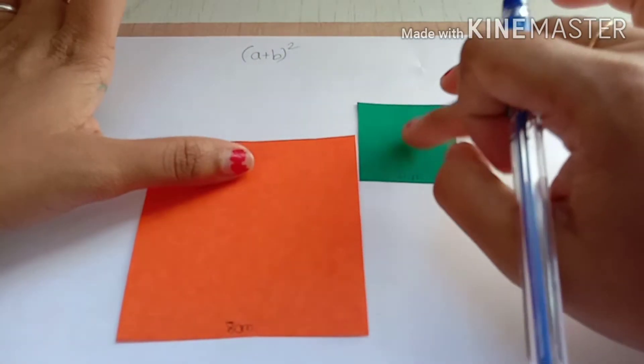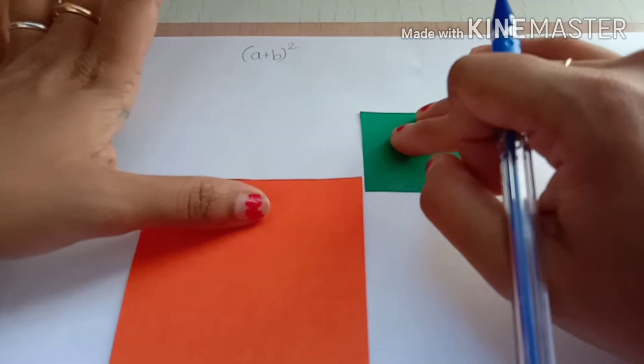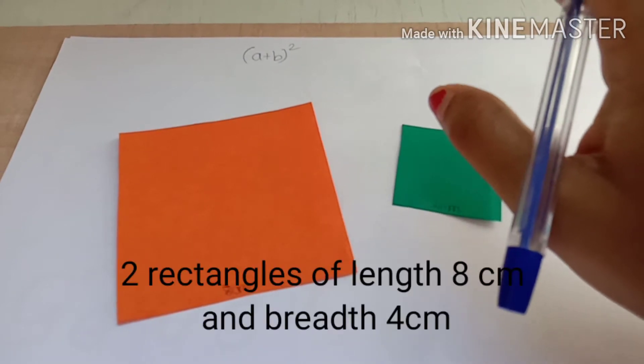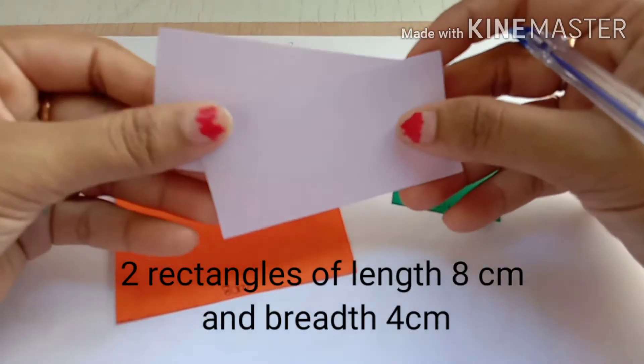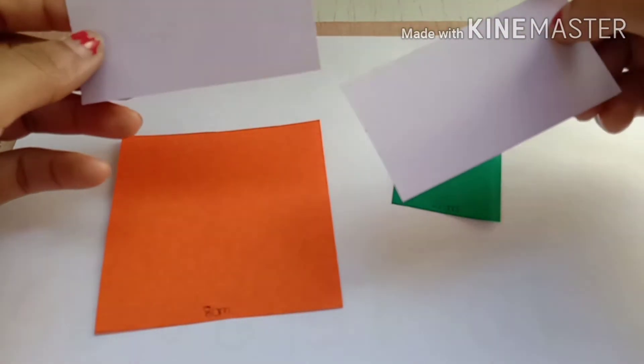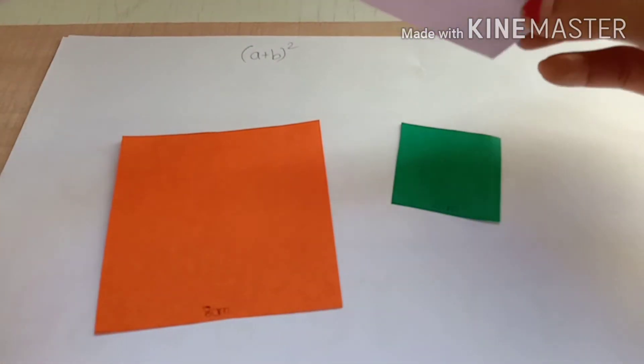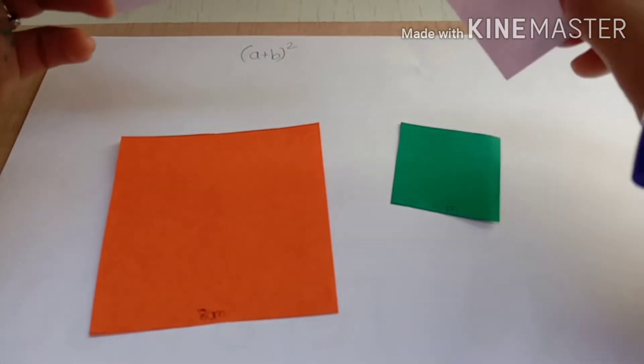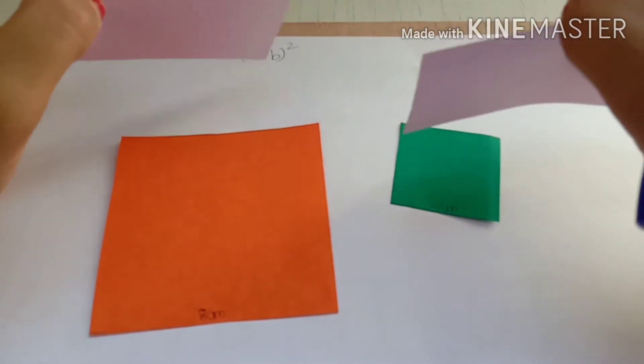And another square of side 4 centimeters. Similarly, I want two rectangles of length 8 centimeters and width 4 centimeters. I have these things: two squares and two rectangles with me. Now I have to arrange these to form a bigger square.